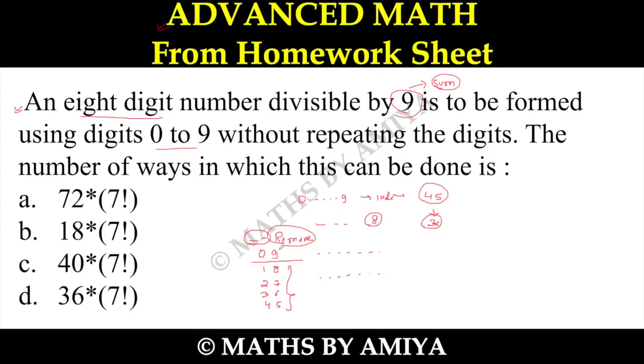So we have to see: if we remove 0 and 9, then we'll have 1, 2, up to 8 remaining—all non-zero digits. And if you want to fit them in 8 places, then first place will have 8 options, then we know 7 will come, then 6, and so on. So this one is nothing but 8 factorial ways. If we remove 0 and 9, that's among the 4 cases.